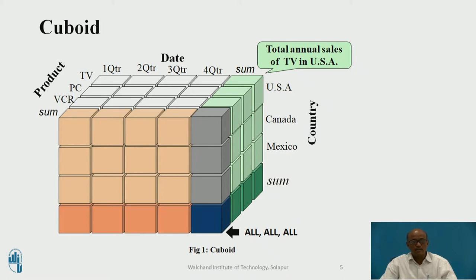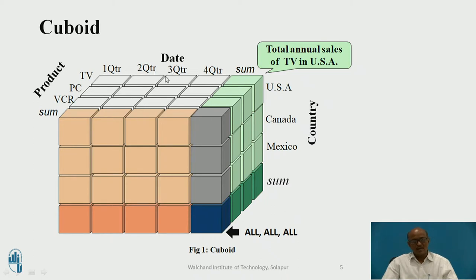Looking at figure 1, that is the cube — it shows three fields: product, date, and country. The products are VCR, computer, and TV. The countries where sales happened are USA, Canada, Mexico, and a summation of all those. On the third axis, sales are shown by quarter: first, second, third, or fourth quarter of the year. So this is an example of sales of VCR, PC, and TV showing which quarter, which duration, and which country the sale took place in.